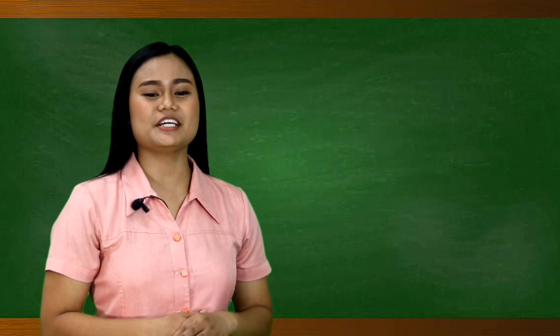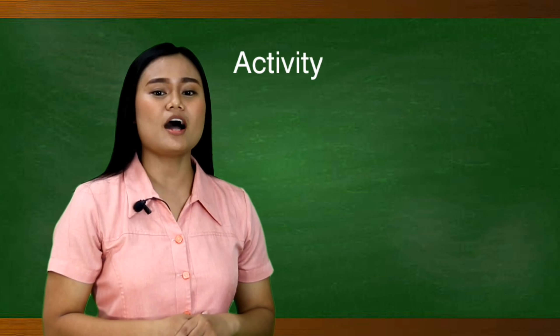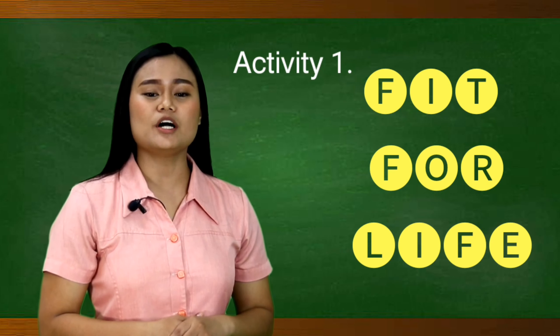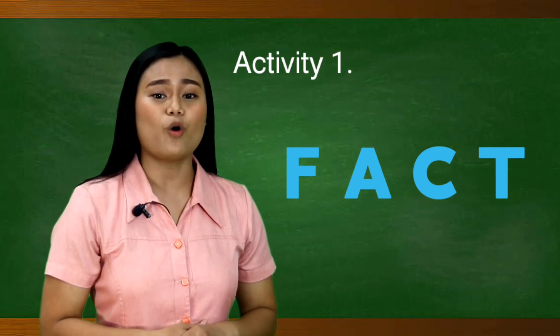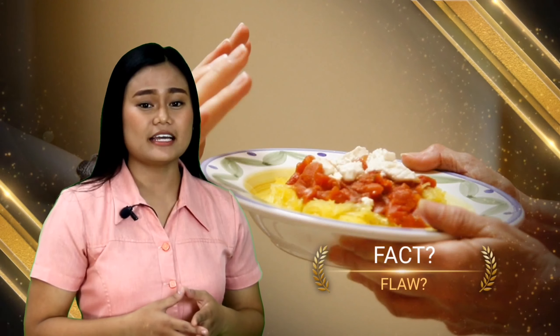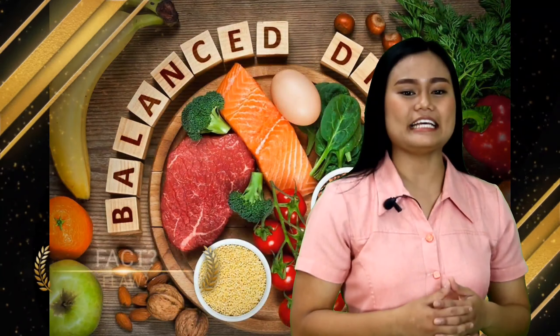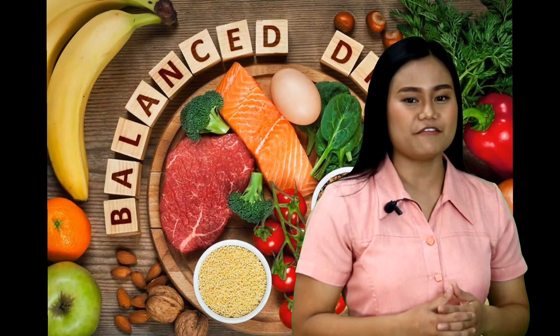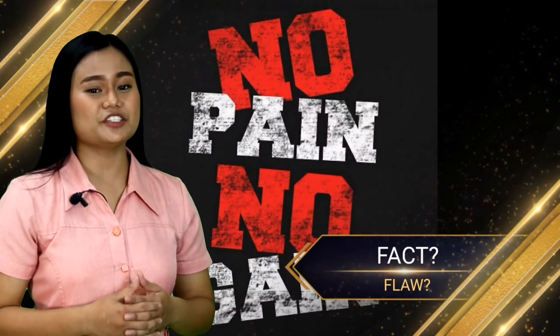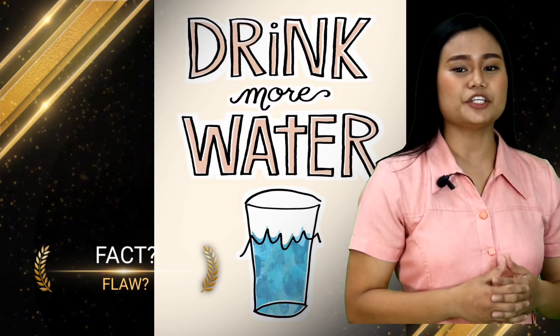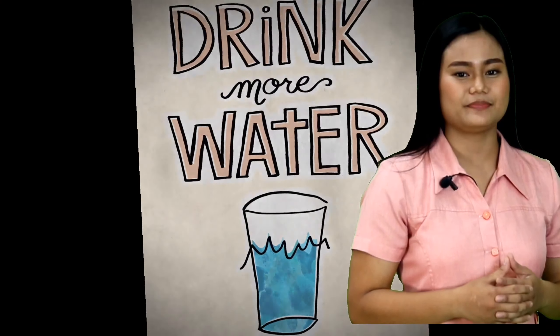Before we proceed, let's have Activity One entitled 'Fit for Life.' Based on your prior knowledge, identify whether each statement is a fact or a flaw. Number one: skipping meals will help you lose weight. Number two: a balanced diet and regular exercise need to be together to become fit. Number three: no pain, no gain. Number four: drink more water to have healthy skin. Number five: less sleep will cause stress.